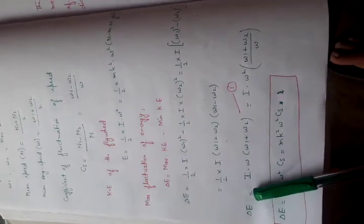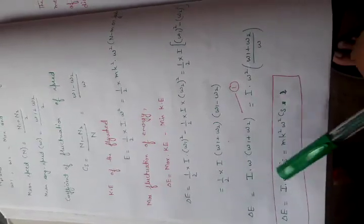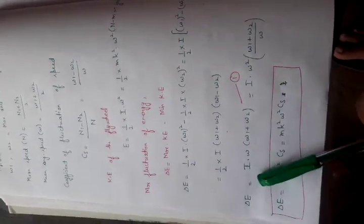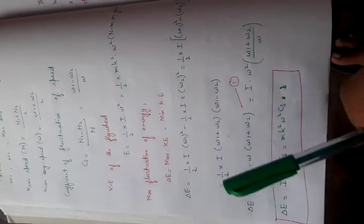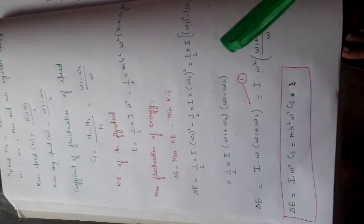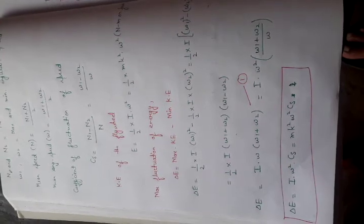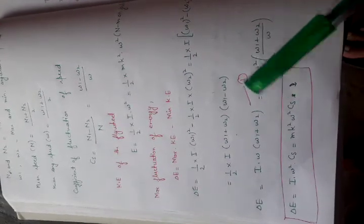Maximum fluctuation of energy: the energy absorbed is maximum energy minus minimum energy, which is the energy stored.